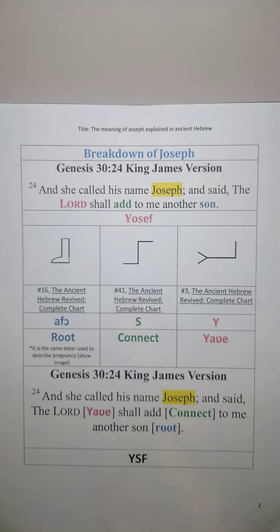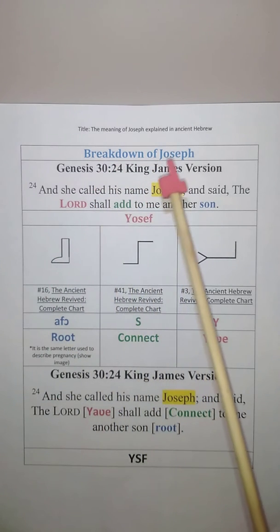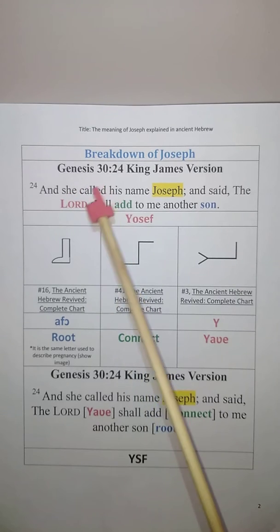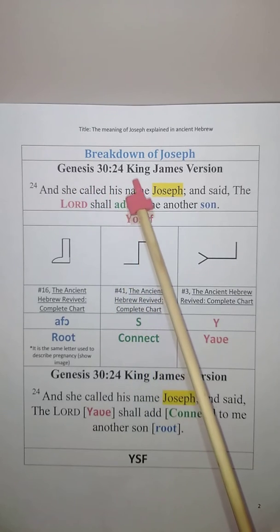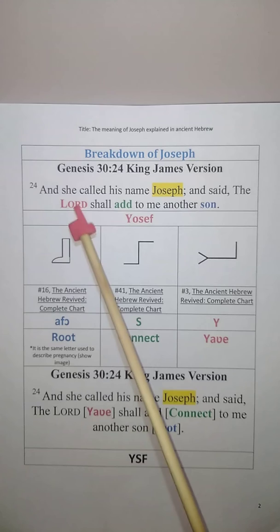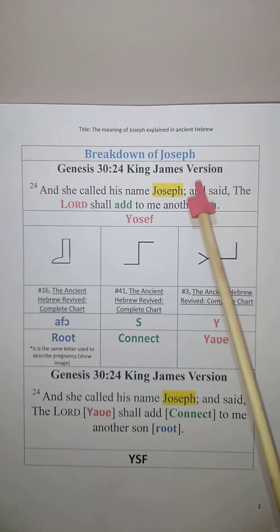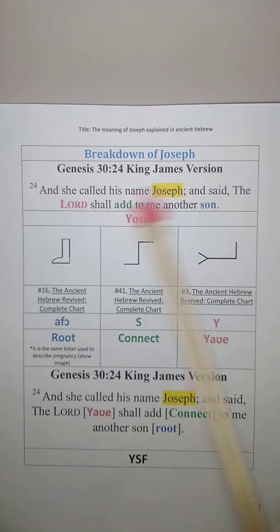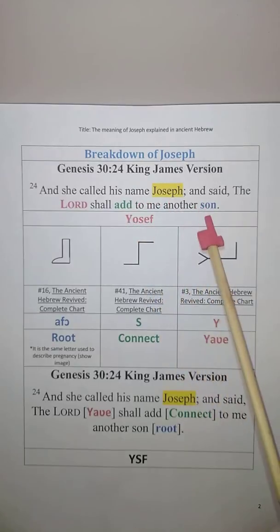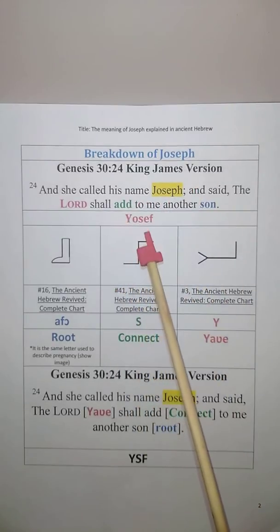Here is the breakdown of Joseph. In Genesis 30 verse 24 in the King James Version, I read: And she called his name Joseph, and said,